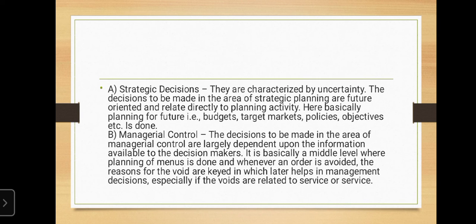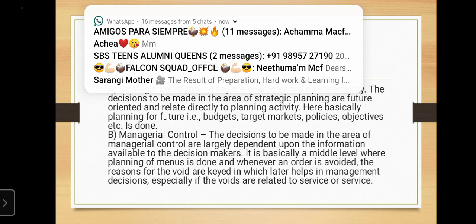First, strategic decisions are categorized by uncertainty. The decisions to be made in the area of strategic planning are future-oriented and relate directly to planning activity — basically planning for the future, such as target markets, policies, and objectives.